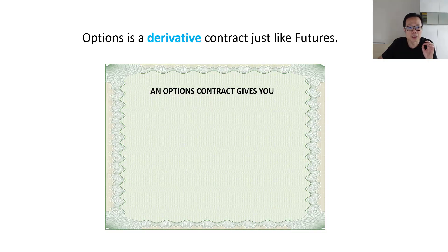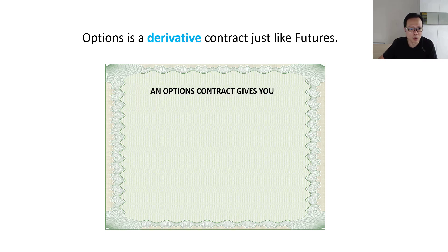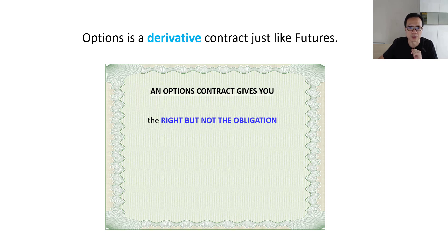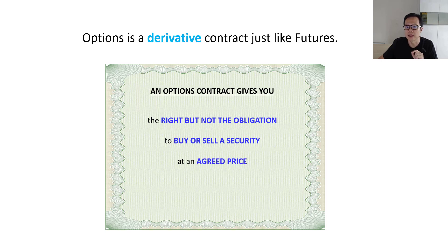First question: what are options? Options is a derivative contract, which means it derives its value from another underlying asset — maybe a stock, a bond, a commodity, or something else. At its most basic level we can define it as a contract that gives you the right but not the obligation to buy or sell a particular security at an agreed price, either up to or on an expiration date.